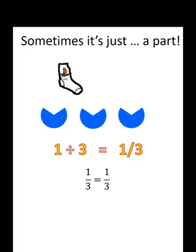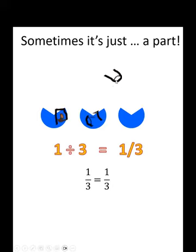Sometimes it's just a part. If we only have 1 whole and we split that into 3 parts, we can't simplify the answer. 1 divided by 3 is 1 third. One piece of a whole where the whole thing would be 3 pieces.